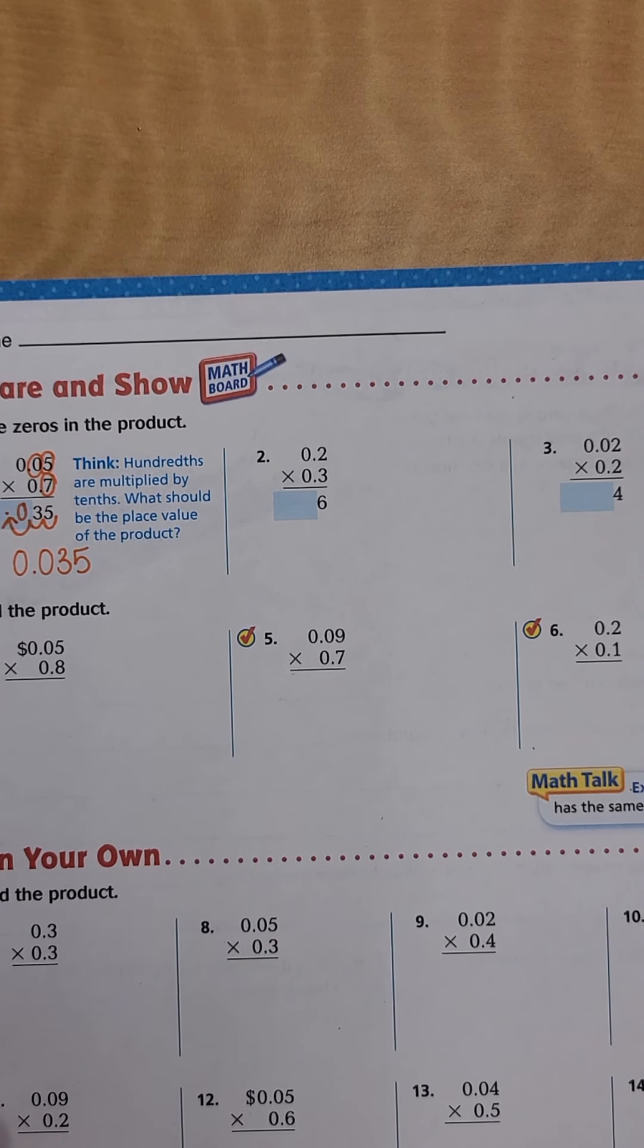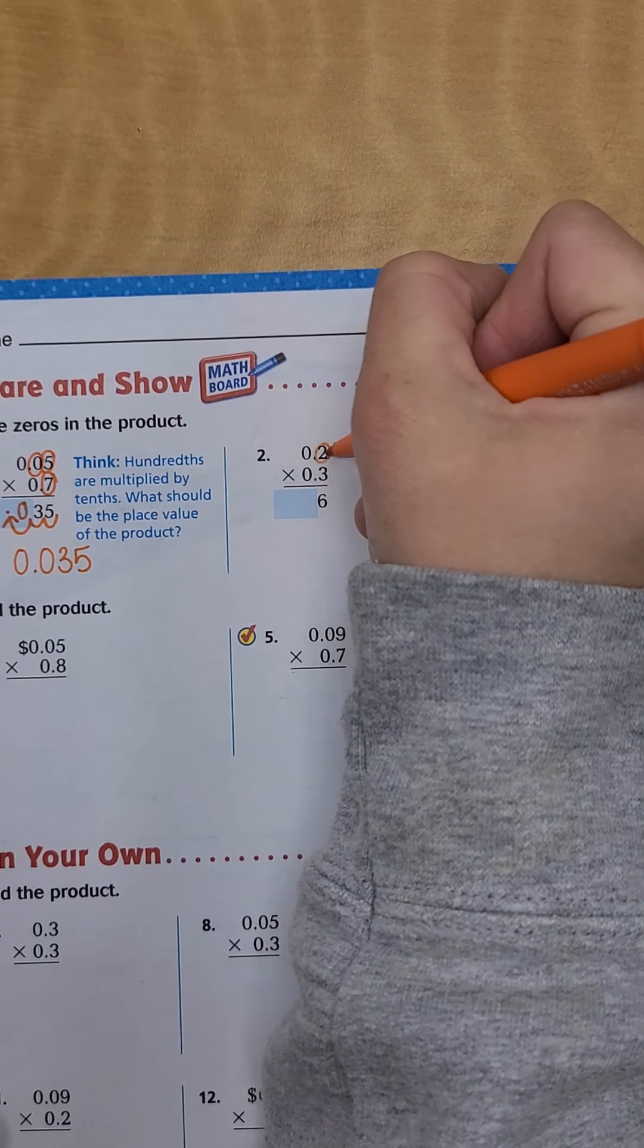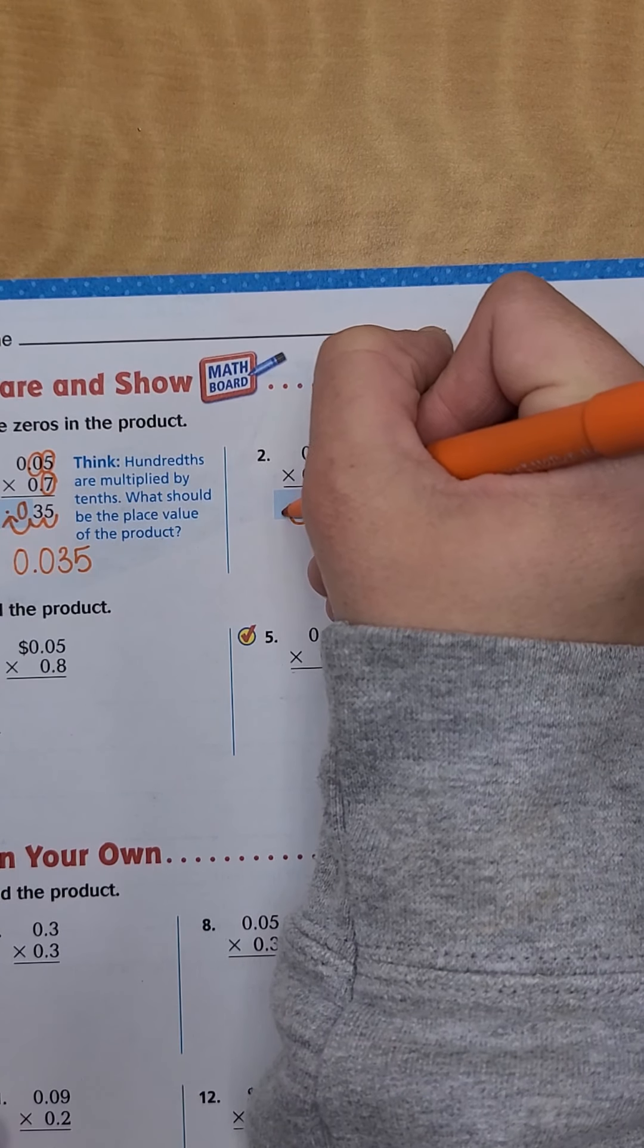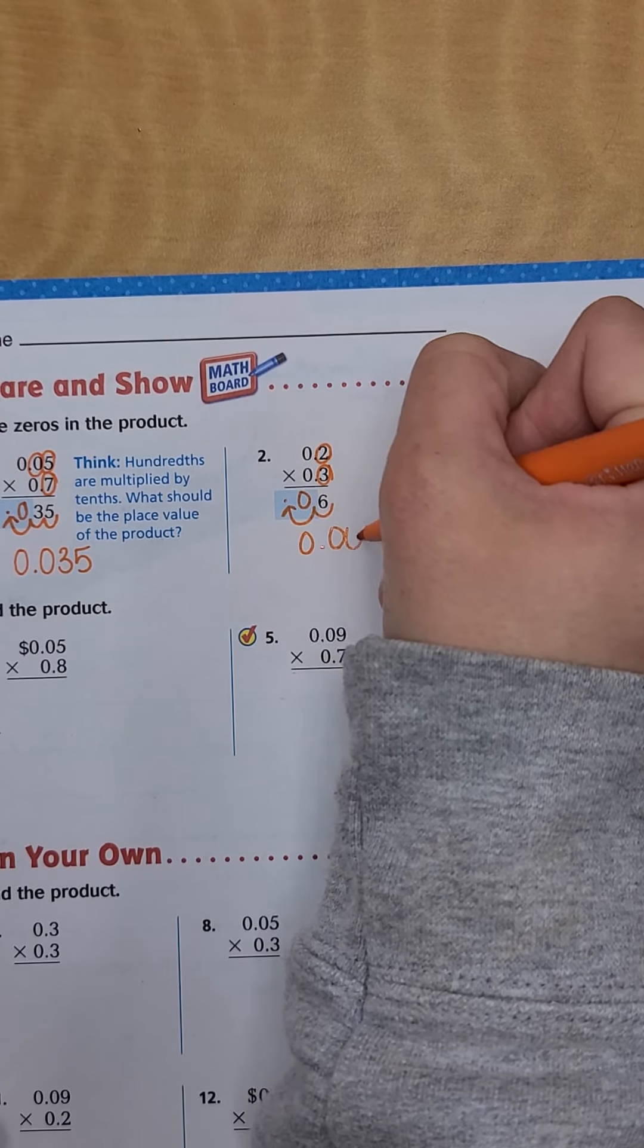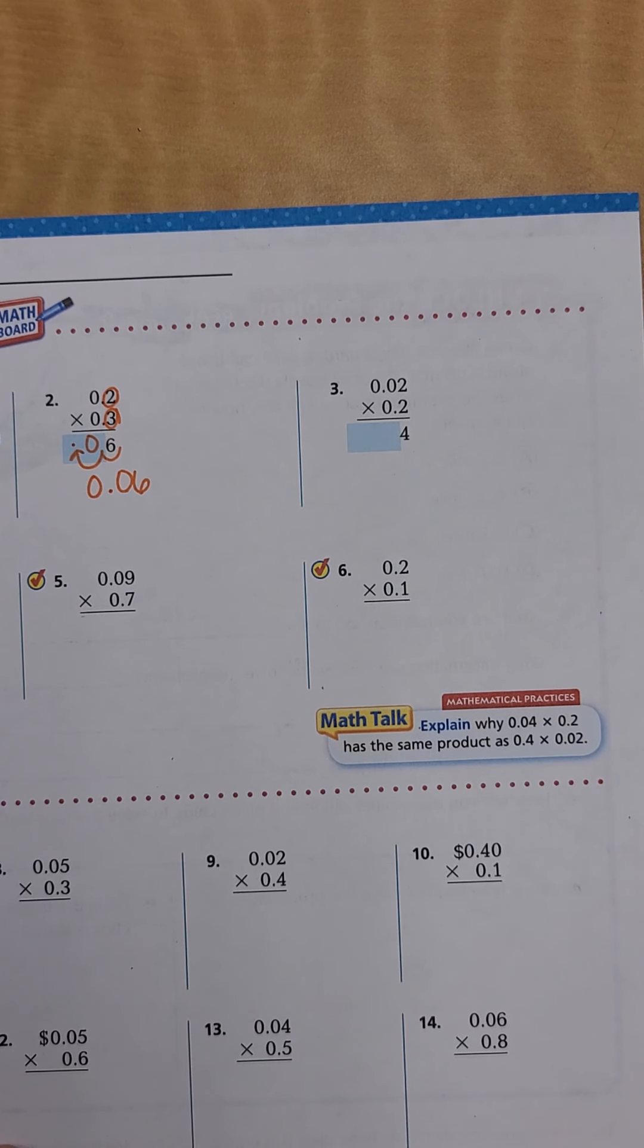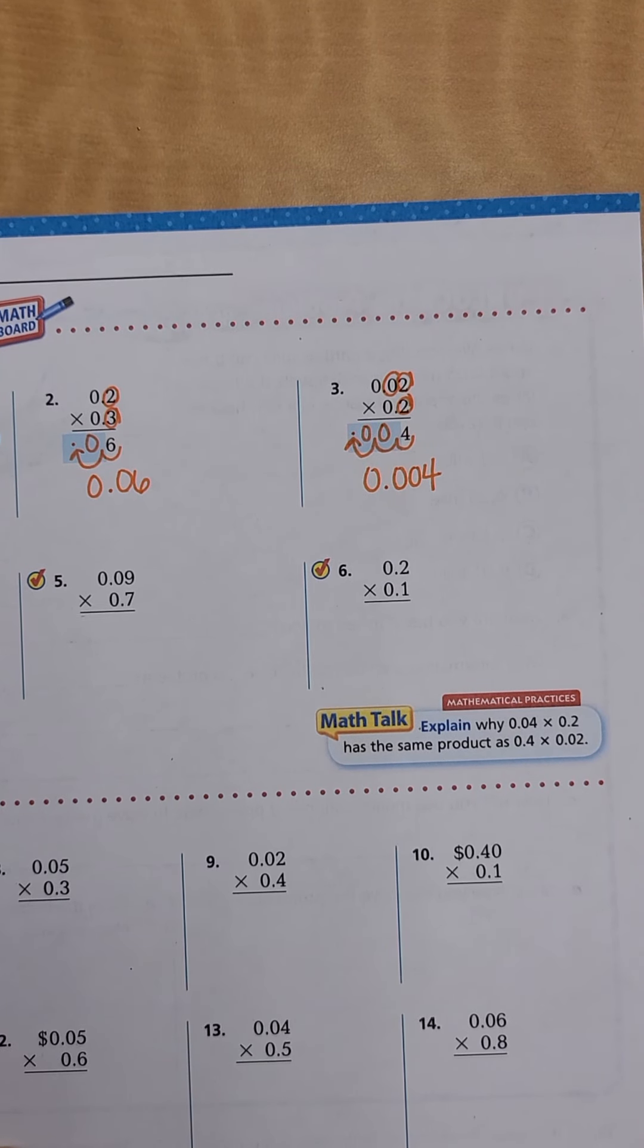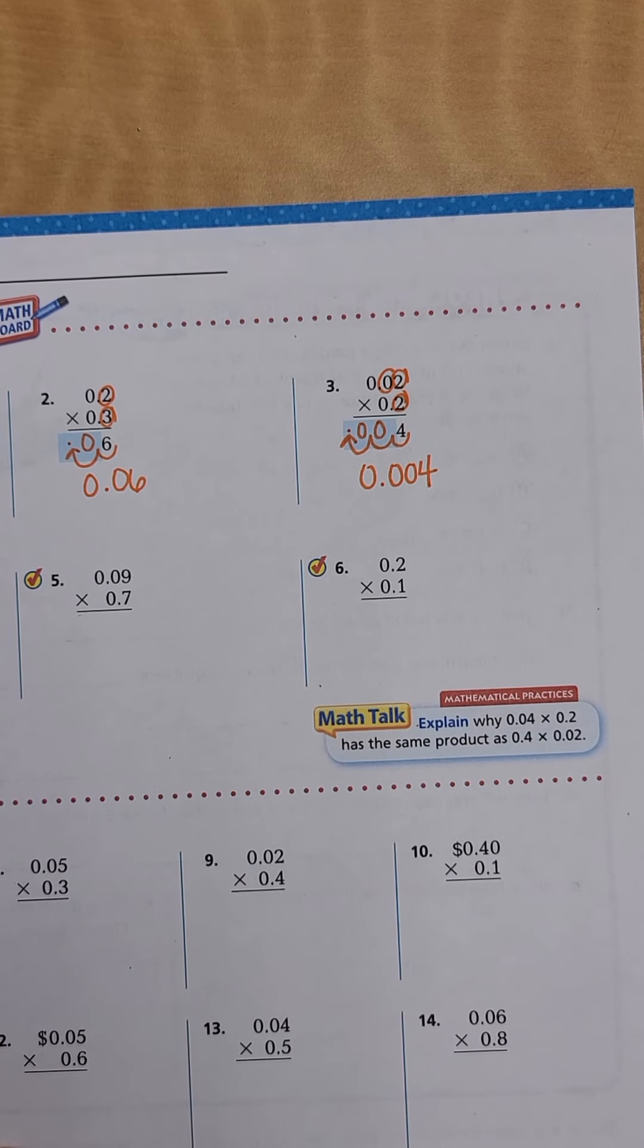All right, let's do one more together and then I'm gonna let you fly. Actually we'll do a couple more together. So this one I have one, two spots, so I'm gonna go one, two spots, put my decimal, add my zero. I'm gonna rewrite my answer as 0.06. All right, so now I want you to do number three on your own. I want you to pause the video real quick. And here is what you should have ended up as your answer: 0.004.